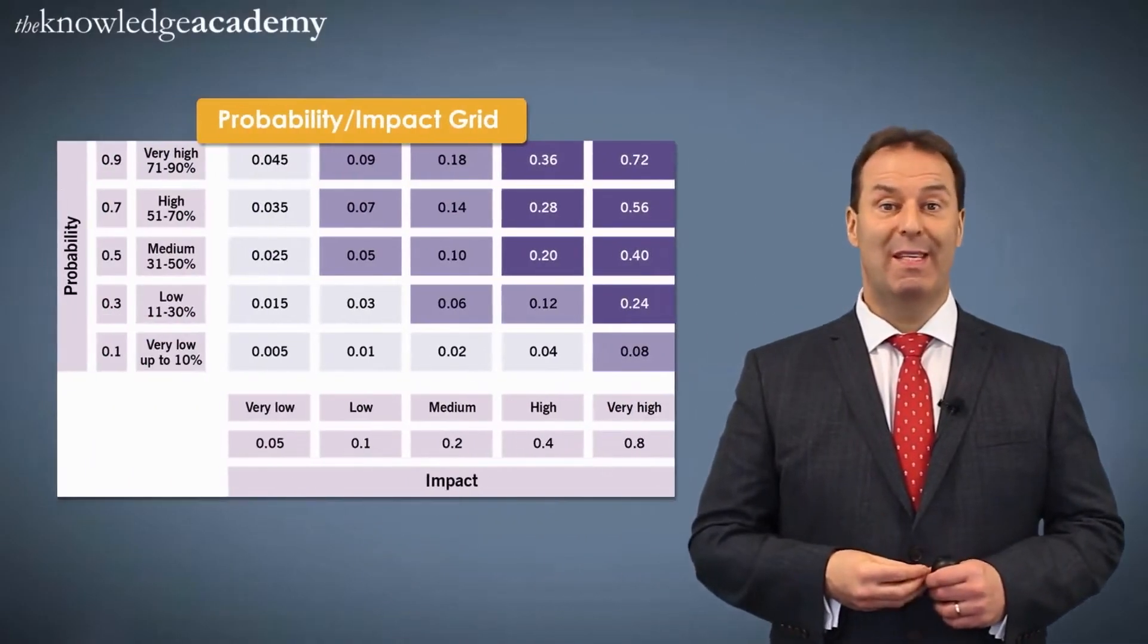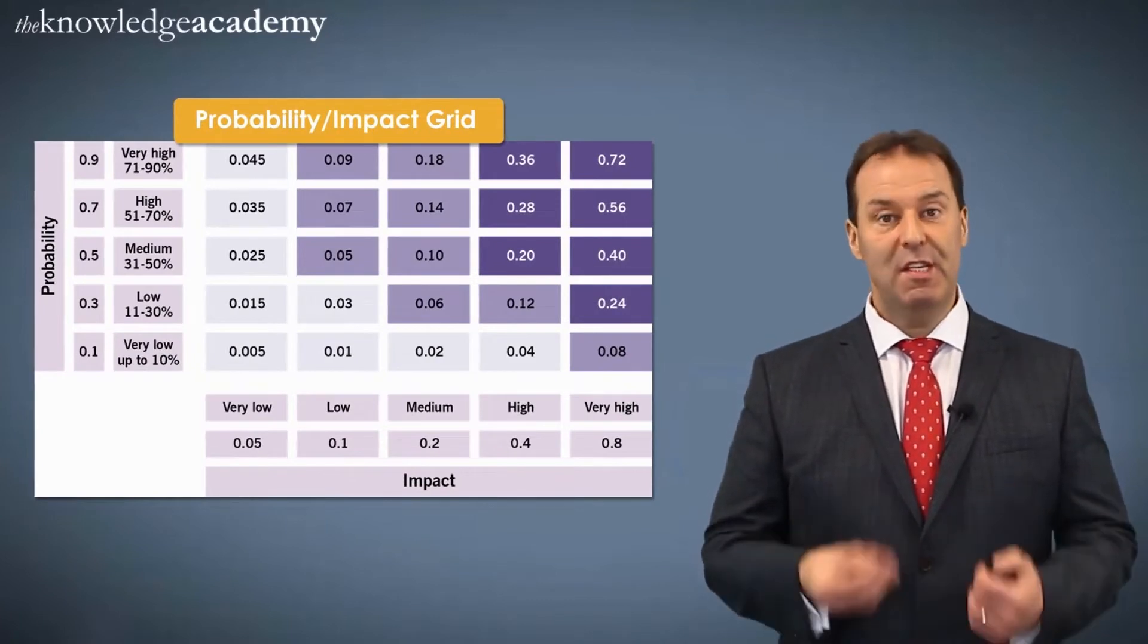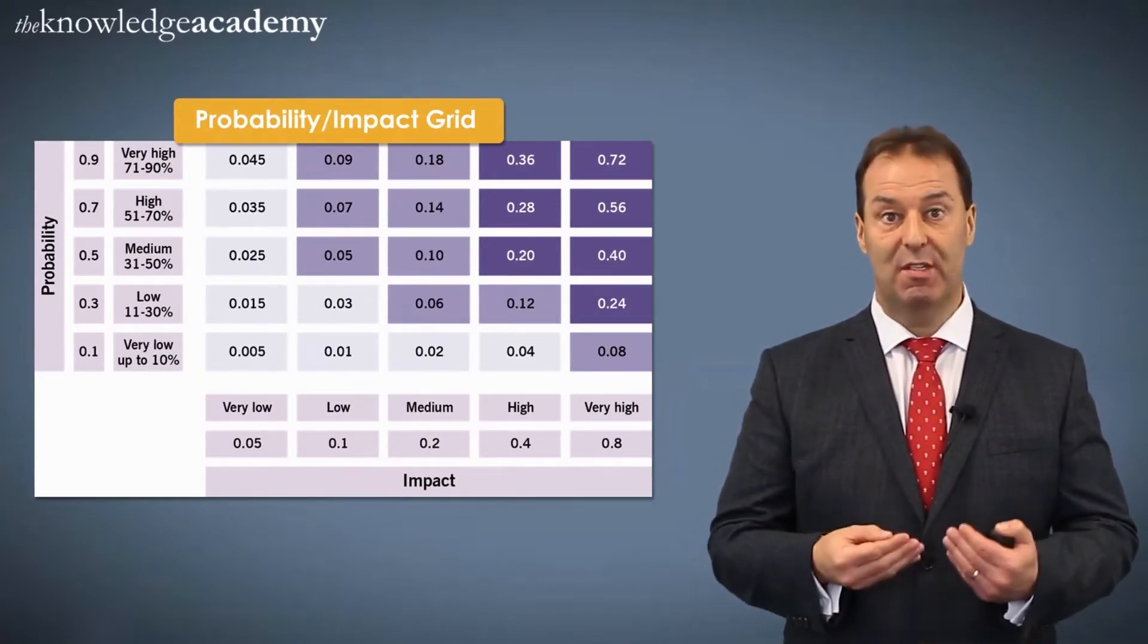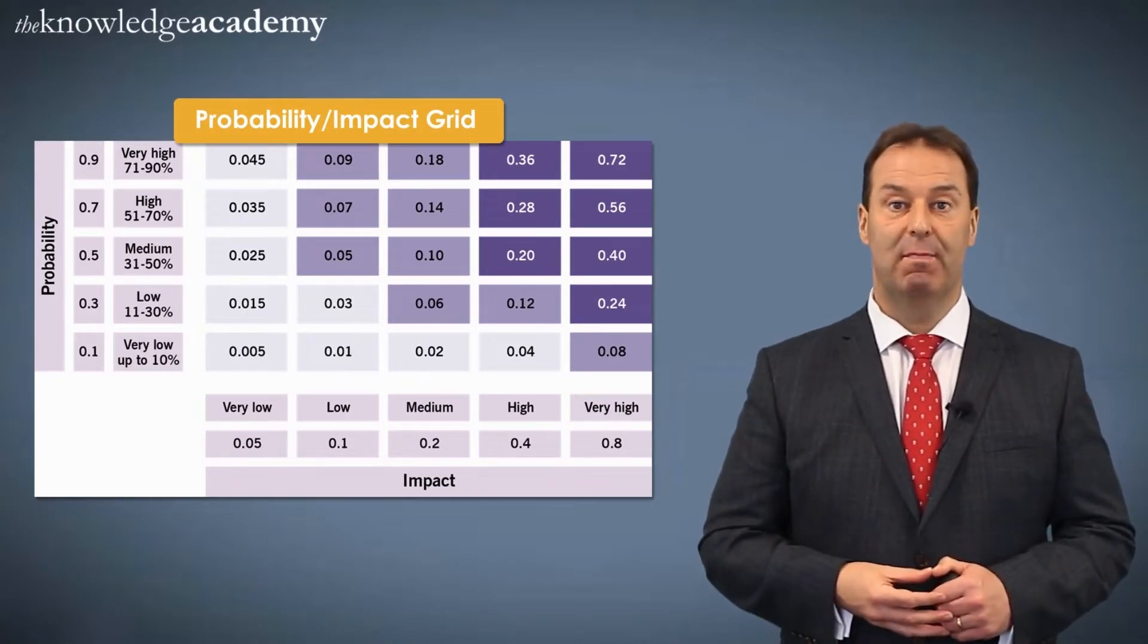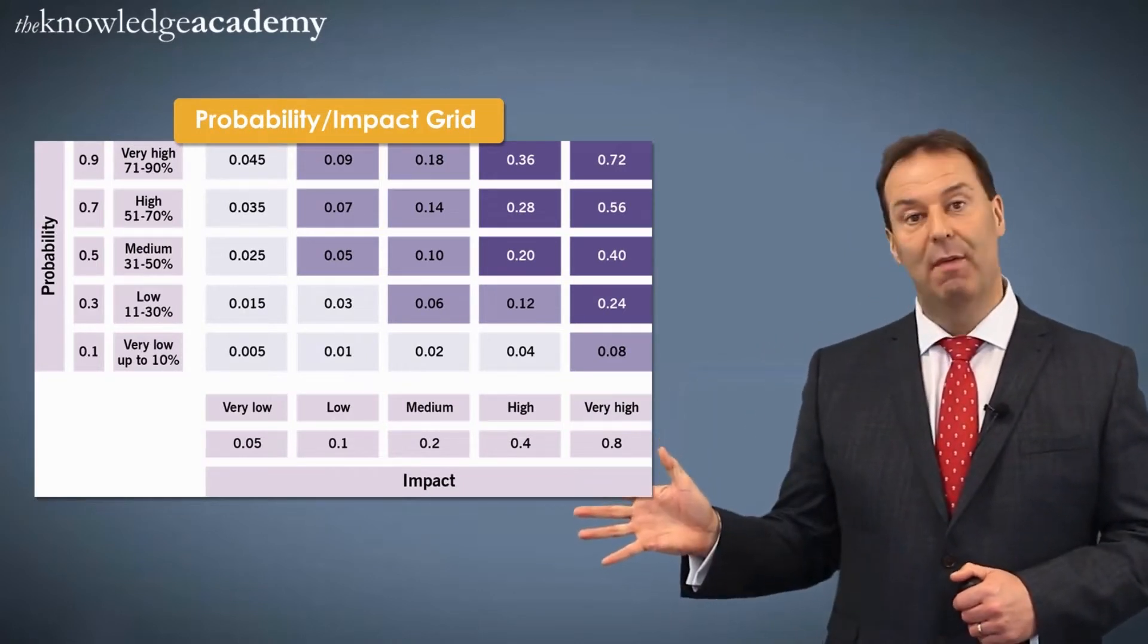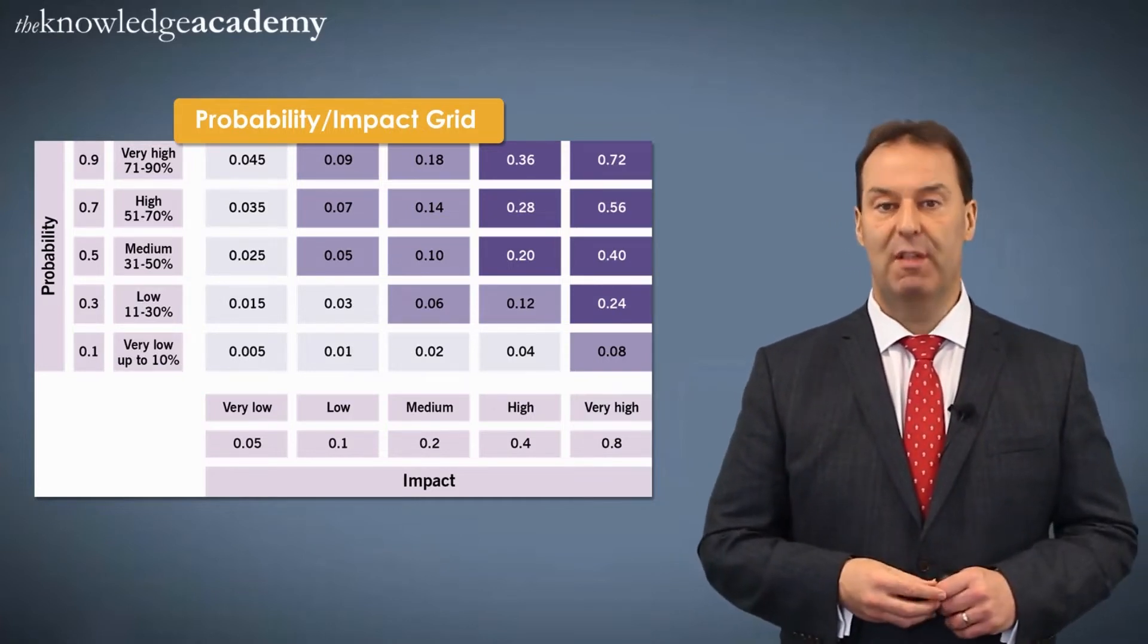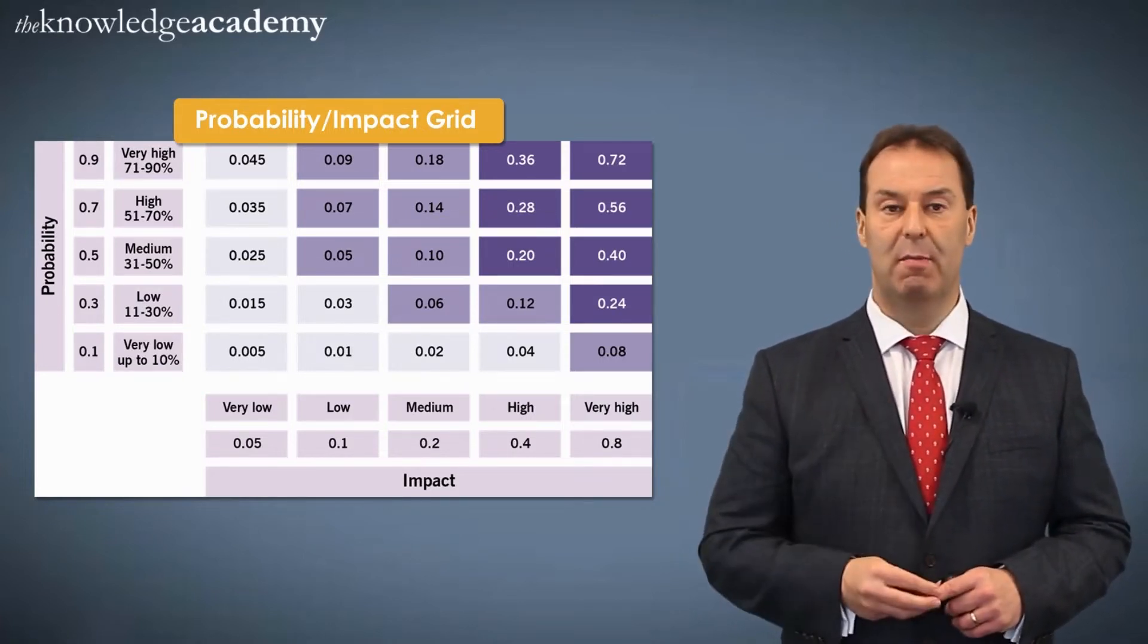Let's take a look at the probability impact grid. This helps me to understand the severity of the risks that my project is facing. You can see an example of the probability impact grid just to my side here. Notice that there are different shadings, which I'll explain in just a moment.